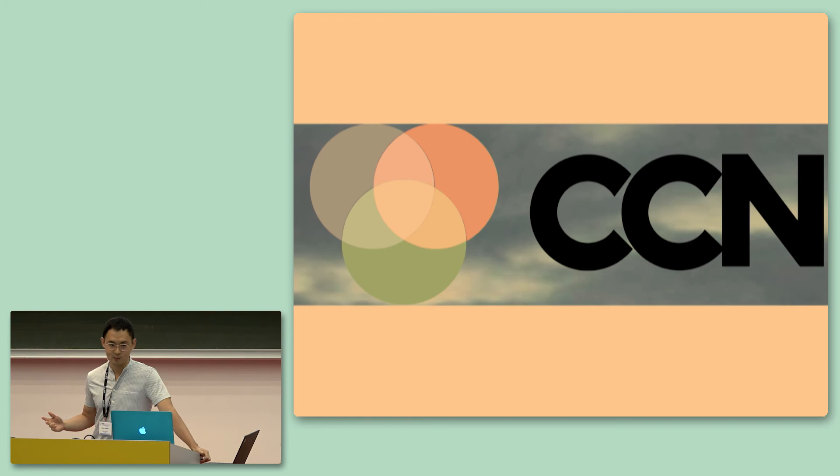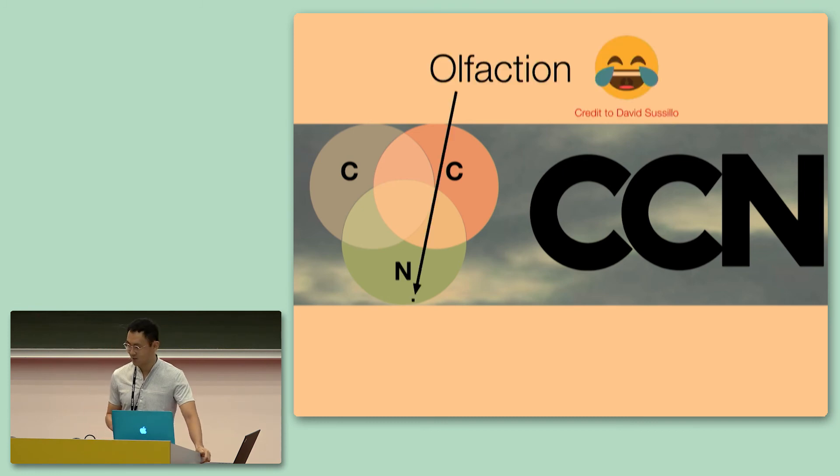So I'm primarily an experimental neuroscientist, and as such, I don't know anything. However, this is my first CCN conference, and I can only assume that this logo next to CCN means we're supposed to be studying at the intersection of cognition, computation, and neuroscience. So I'd like to first thank the program committees in choosing a talk that has nothing to do with at least two of these three things. And also, credits to David for the emoji.